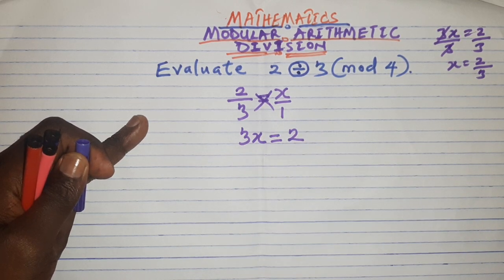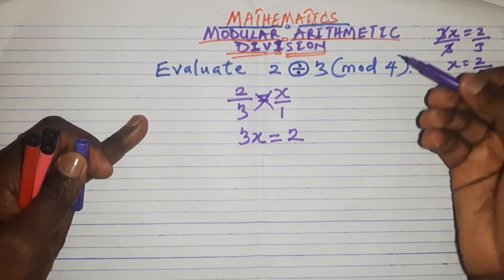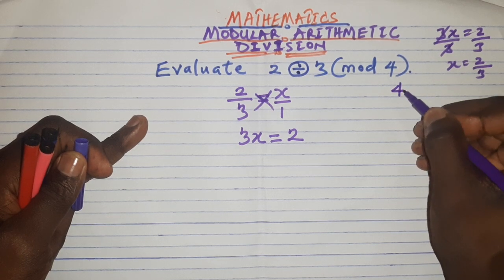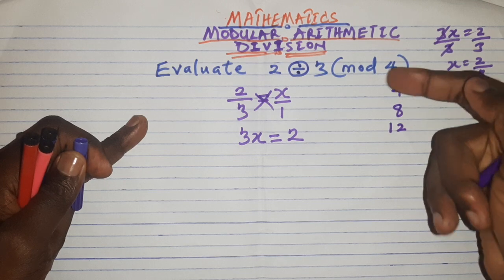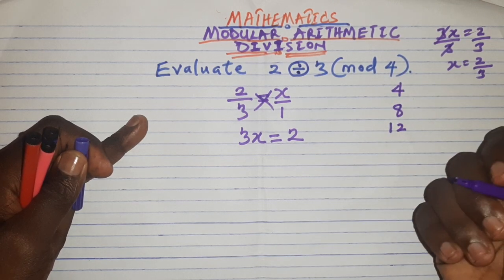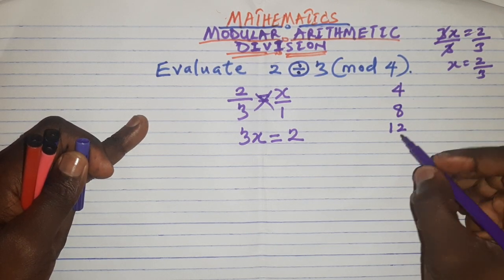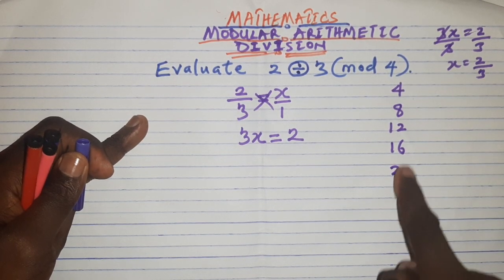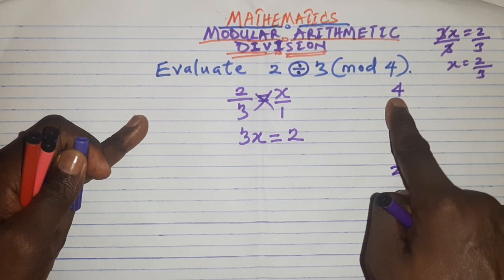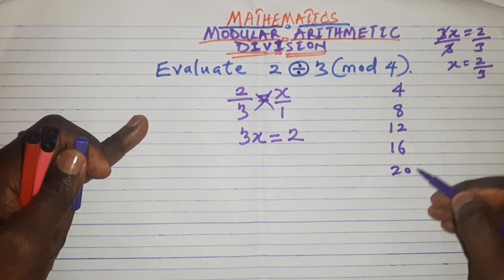So let me list out some of the multiples of 4. I'll start with 4, 4 plus 4 is 8, 8 plus 4 is 12. You see I'm adding 4 to get the next multiple or you can use your multiplication table. Then 12 plus 4 is 16 and so on. You can go on and on. I'm just stopping here because I have seen what I'm going to add.